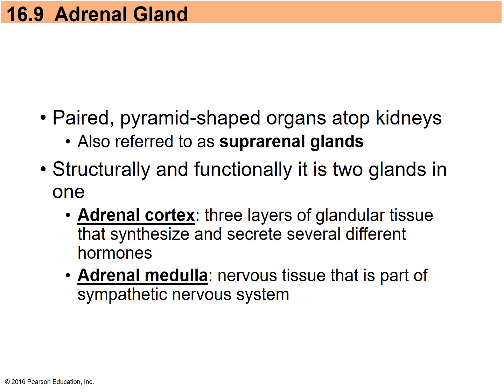The adrenal gland consists of a pair of pyramid-shaped organs on top of the kidneys. In terms of structure and function, it is really two glands combined in one: the adrenal cortex, which secretes several different hormones, and the adrenal medulla, which is classified more as nervous tissue associated with the sympathetic division.